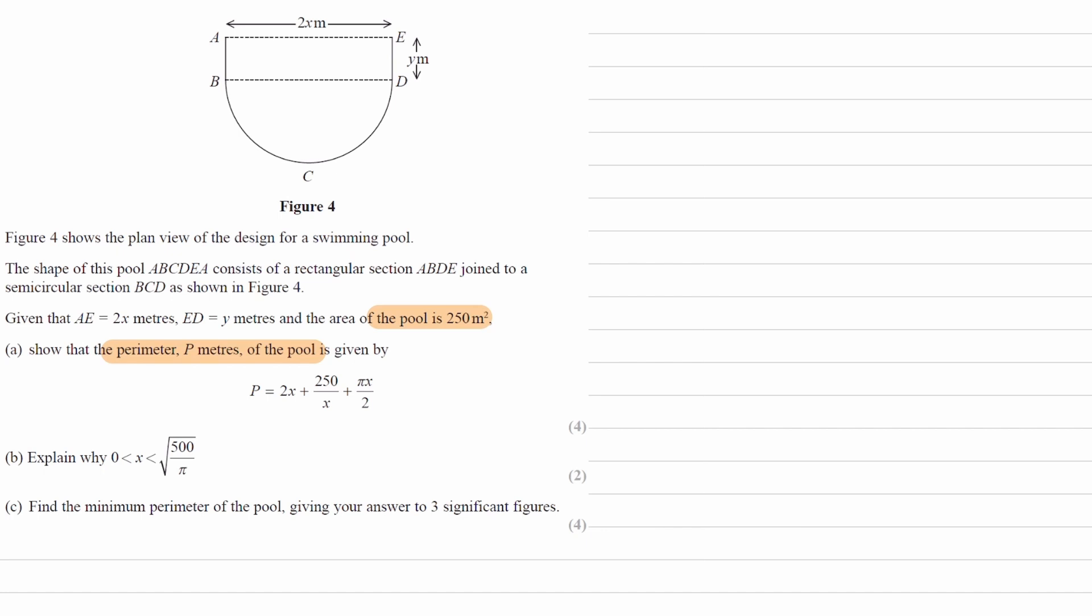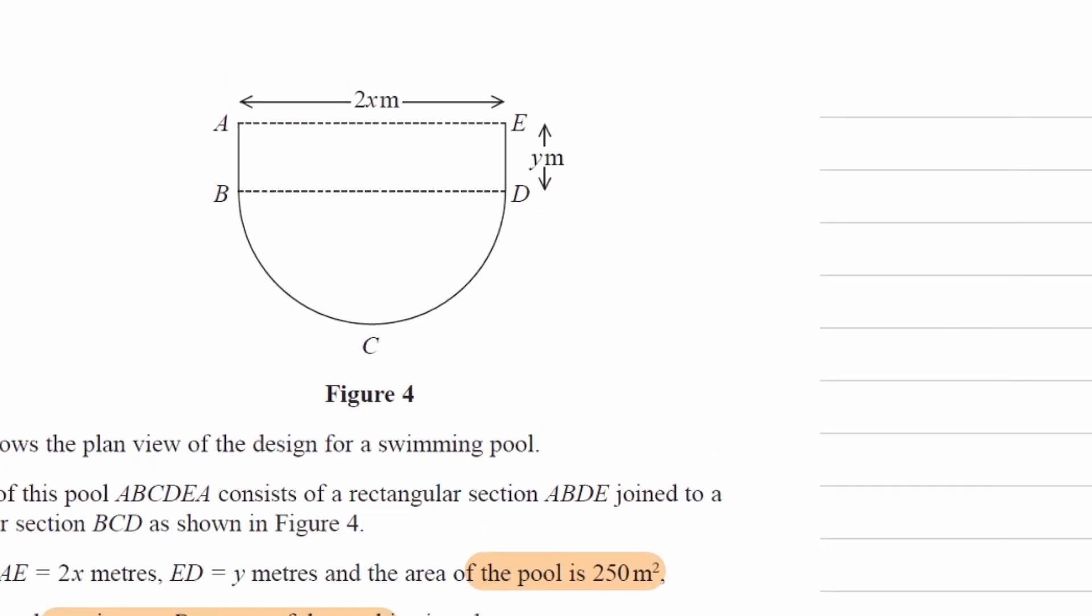We're given this length of 2x, this length of y. And we're also told the area of the pool is 250. We're trying to work out the perimeter of the pool and show that it's equal to what we have down here. Let's write out some of the dimensions on our object. This side will also be y. The radius of that semicircle is x. The circumference of a circle is 2πr. In this case, that'll be 2πx. Divide that by 2, as we have a semicircle here, and we end up with this bottom side being πx.